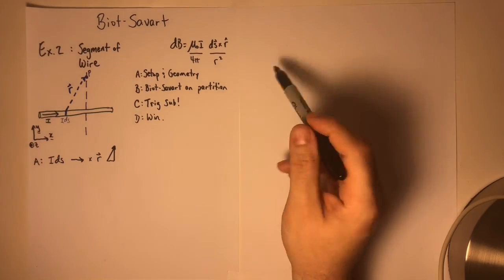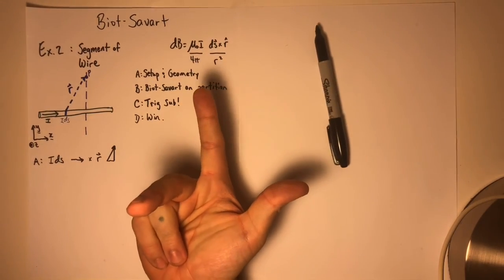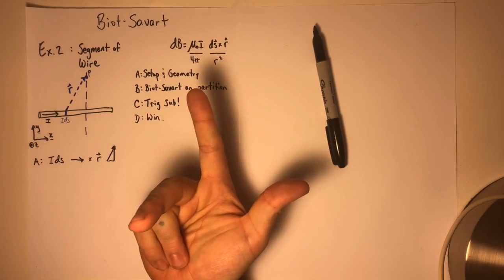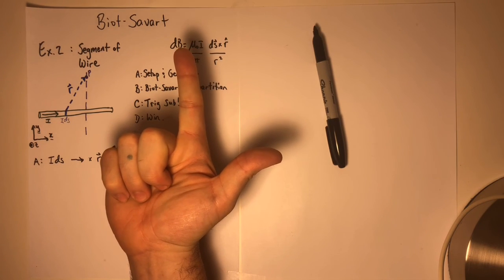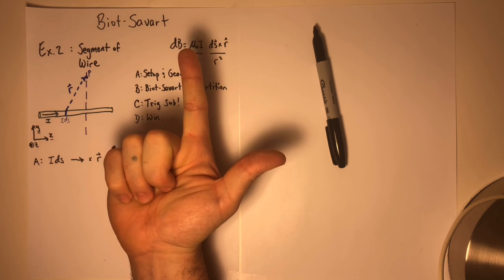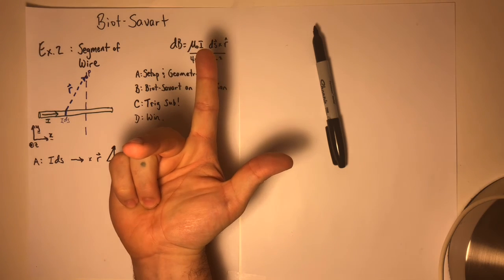So that leaves us in a right-hand rule kind of way of thinking about it with an IDS vector that points to the right. A component of R, the only component that matters, that points up. And that's going to give us a field at point P.